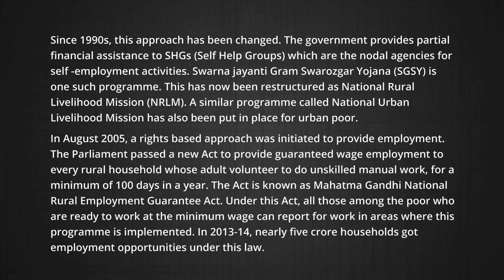In August 2005, a rights-based approach was initiated to provide employment. Parliament passed a new act to provide guaranteed wage employment to every rural household whose adult members volunteered to do unskilled manual work, for a minimum of 100 days in a year. The act is known as the Mahatma Gandhi National Rural Employment Guarantee Act. Under this act, all those among the poor who are ready to work at minimum wages can report for work in areas where the program is implemented. It was found that in 2013-14, nearly 5 crore households got employment opportunities under this law.